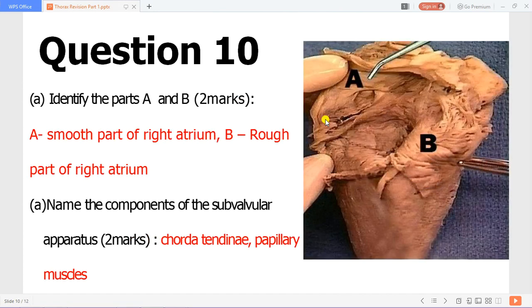The parts labeled A and B - this is the inner aspect of the heart. You can appreciate this is the smooth part of the right atrium and this is the rough part of the right atrium. This rough part is because of these trabeculations called the musculi pectinati, which are branched cardiac muscles. This is the fossa ovalis. Components of the subvalvular apparatus include the chordae tendinae and the papillary muscles.